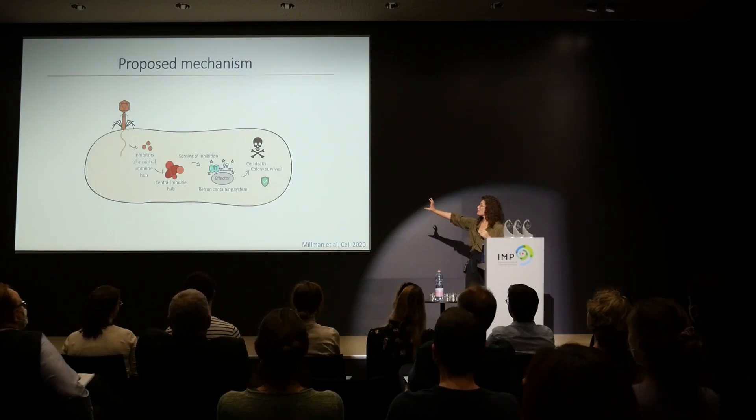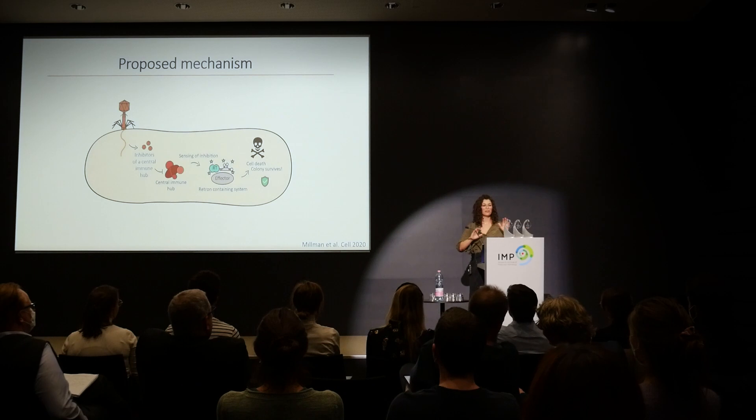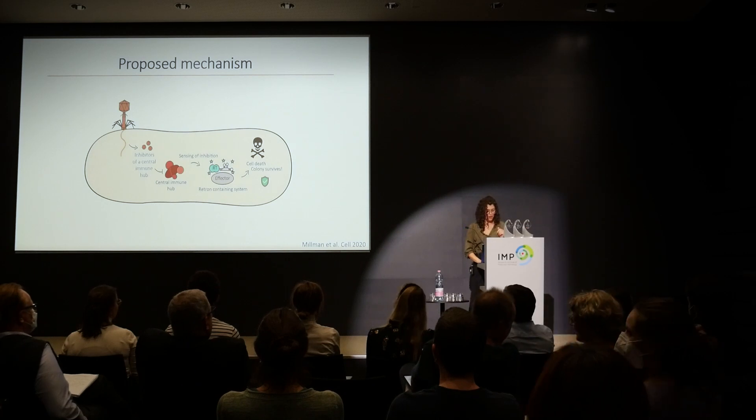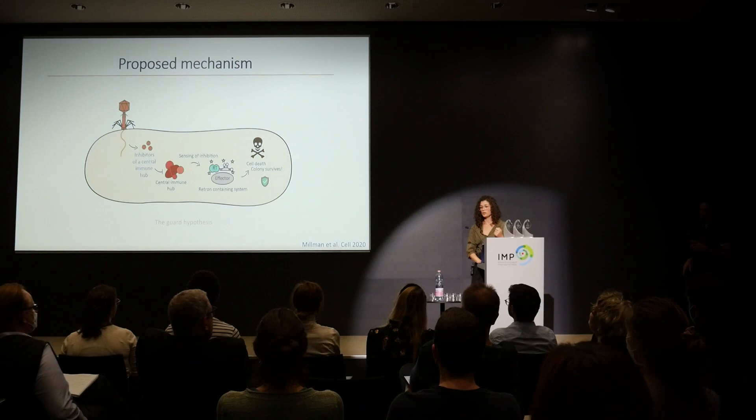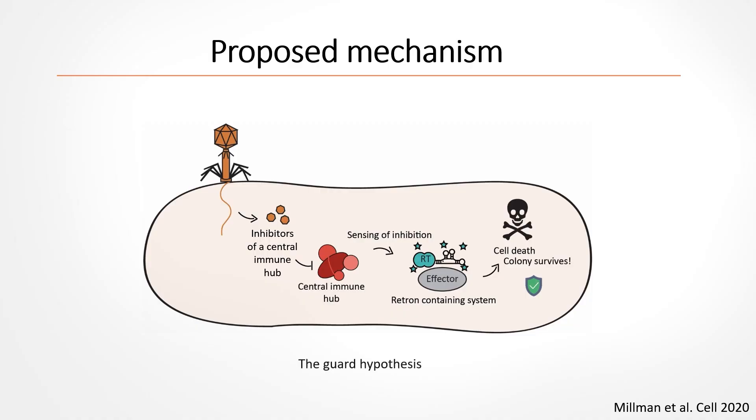It's as if I had an alarm system in my house, and if someone tampers with this alarm system, a second line of defense is triggered — maybe blow up the house. This concept reminded us of an interesting idea in plant immunity, where immune components guard key cellular components and don't sense the pathogen itself, but rather sense whatever action or effect the pathogen has on those key components. This is another interesting link between prokaryotic and eukaryotic immune systems.